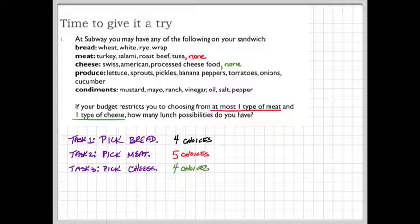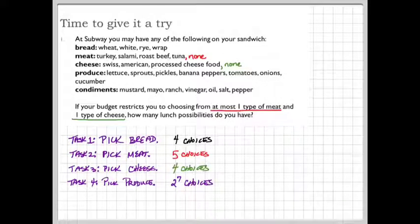And now, you can pick your produce. In fact, to pick produce, there are seven different kinds of produce: lettuce, sprouts, pickles, banana peppers, tomatoes, onions, and cucumber. And you can either choose to include it or not for each type of produce, leading to two to the seventh choices for your produce combinations.